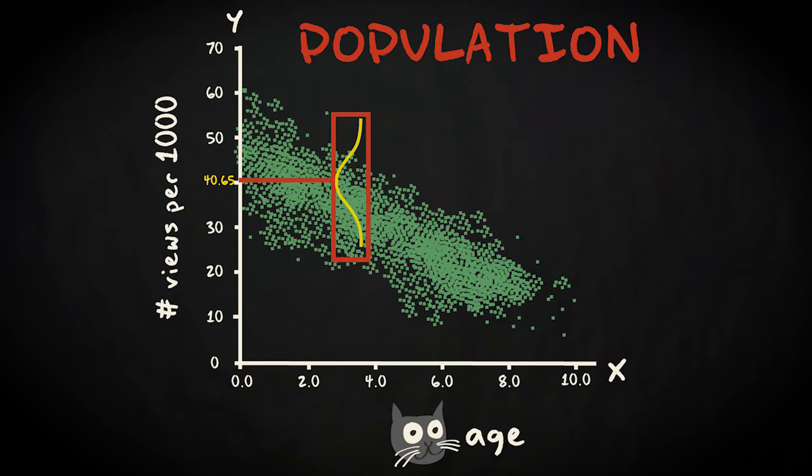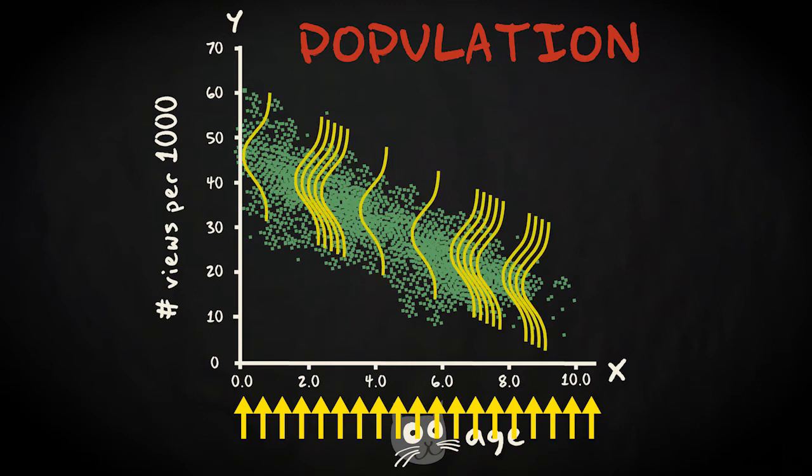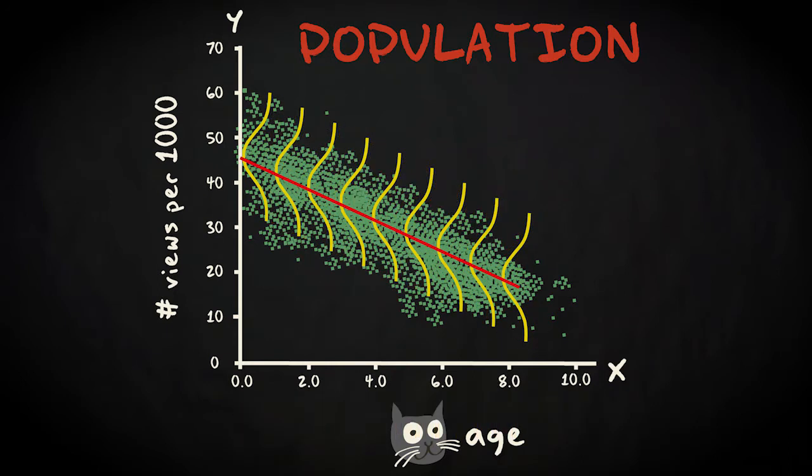In simple linear regression, we assume that conditional on the value of the predictor, in other words, for any given cat age, the shape of the distribution of popularity scores looks exactly the same. Assuming that the relation is perfectly linear, the population regression line goes through the means of these distributions.